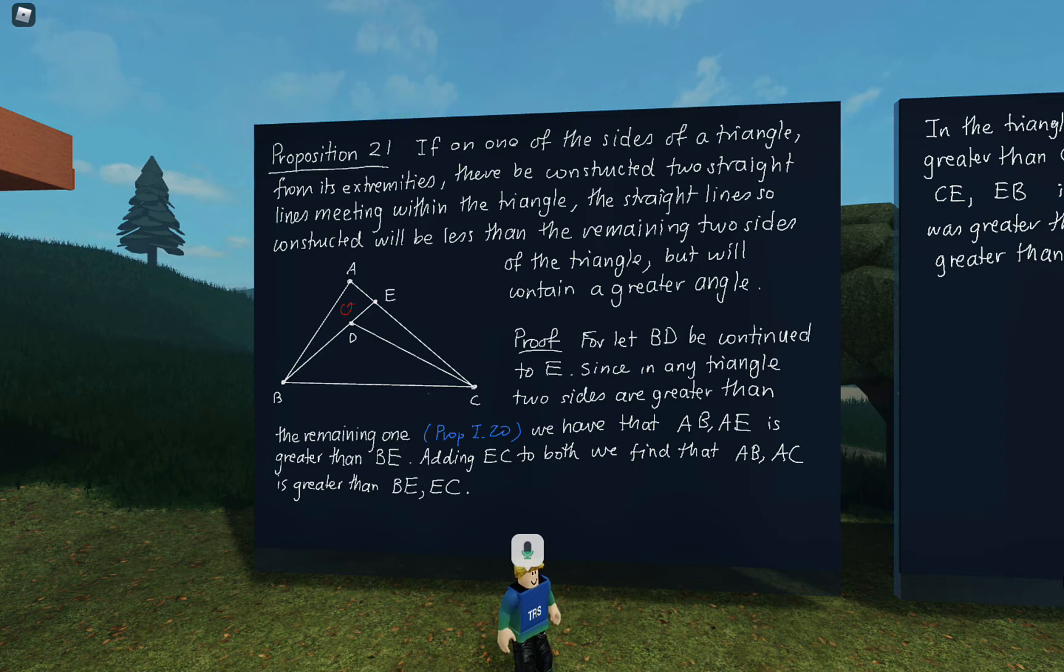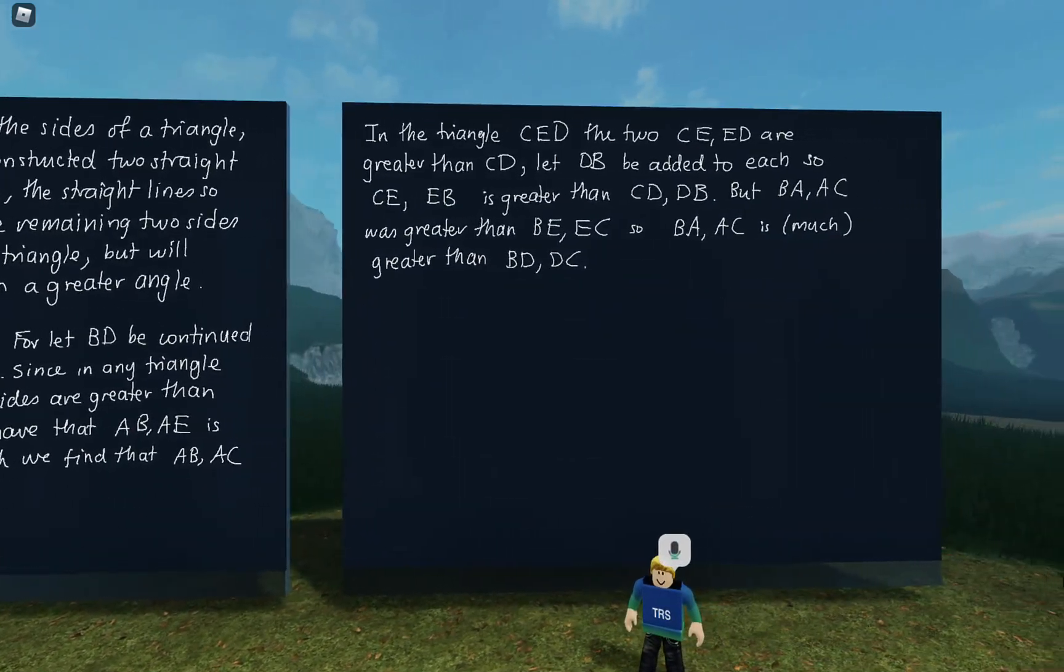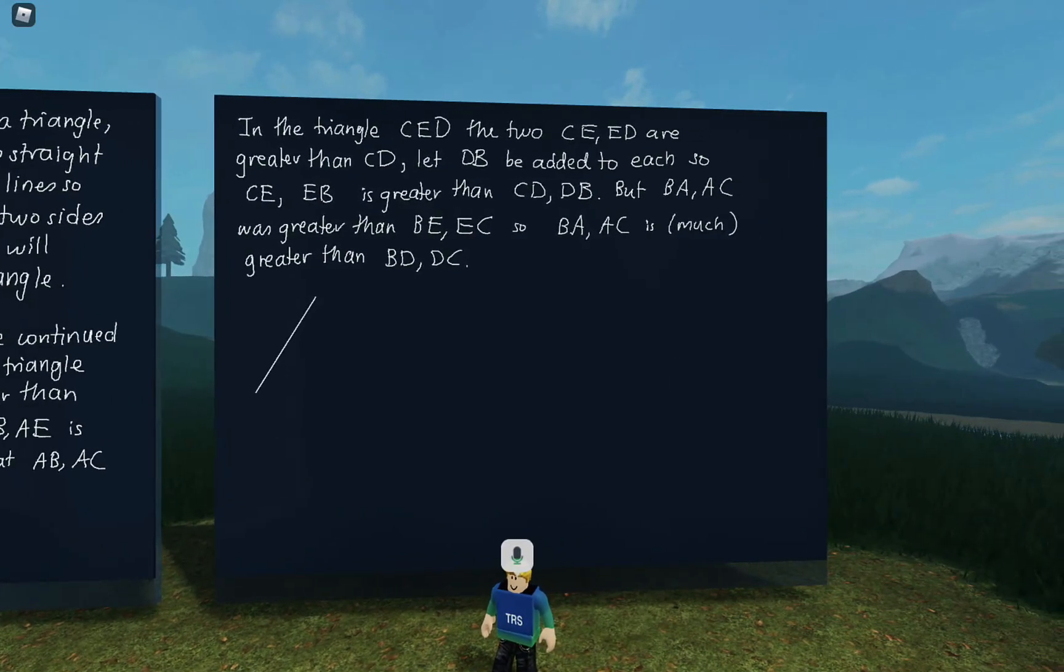Okay, so for the angles, note that in any triangle, the exterior angle is greater than the interior and opposite angle. So that's proposition 16. I kind of want to copy that diagram over. So maybe I'll just take a moment to do that.